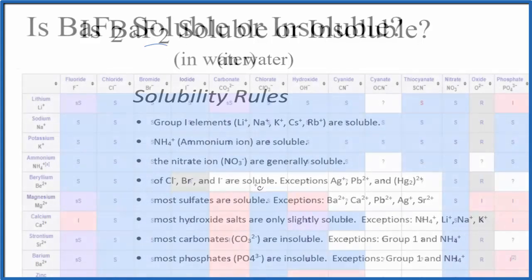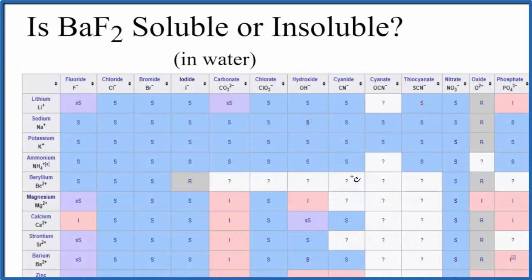Here's part of a larger solubility table. We go down and here's barium. Barium forms ions with a 2+ ionic charge. Up here, here's the fluoride ion F minus. So we go down and across.